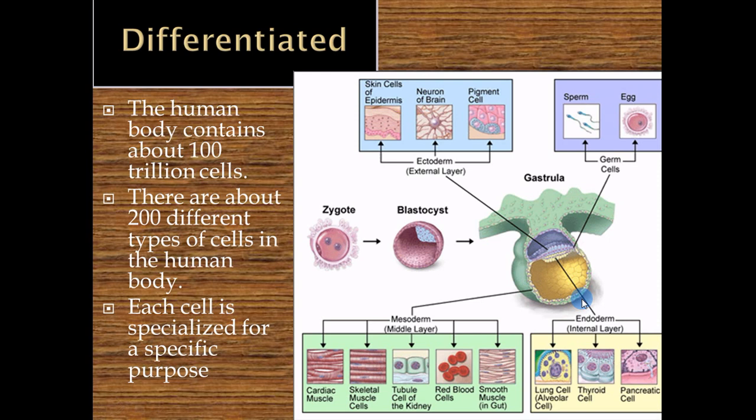Cells differentiate — even though the generic cell in your body has certain organelles, the proportions are different depending on needs. Some cells have more mitochondria because they make more energy. Cells making lots of proteins will have lots of rough endoplasmic reticulum — like white blood cells making tons of protein antibodies. Organs that detoxify things, like the liver, are specialized with organelles like peroxisomes that break apart toxins and invaders.